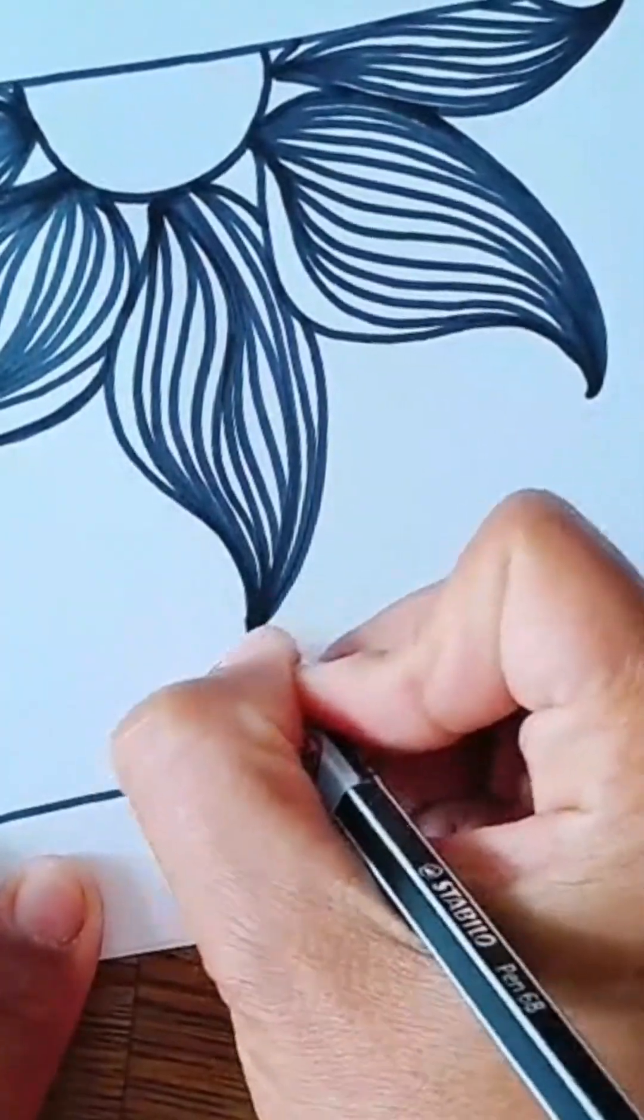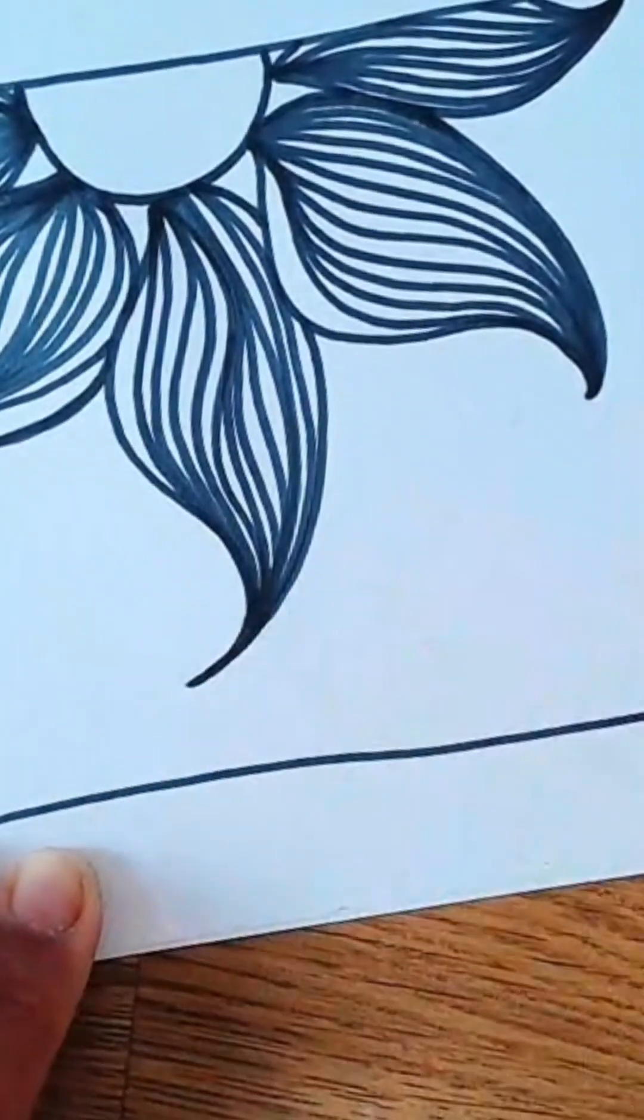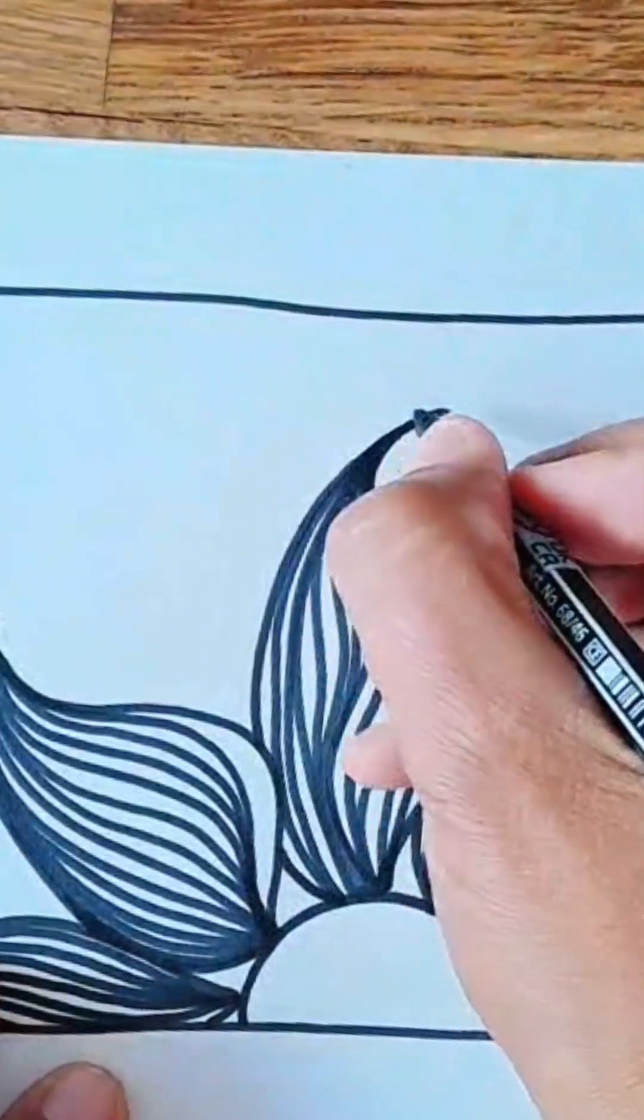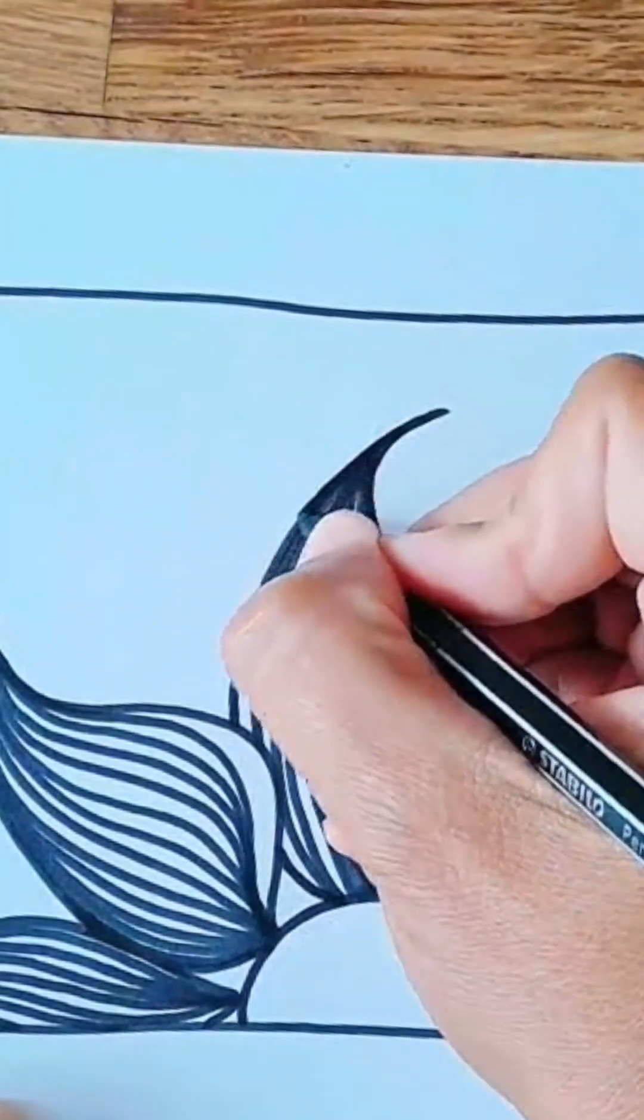I'm just creating a bit more of a pointed tip on the ends of these petals and outlining the petals to create a darker edge. That's an optional thing.